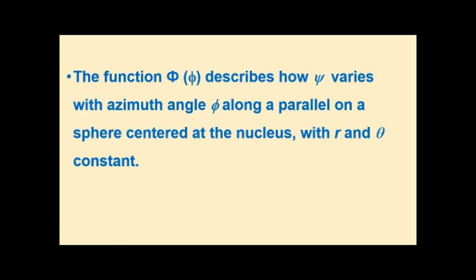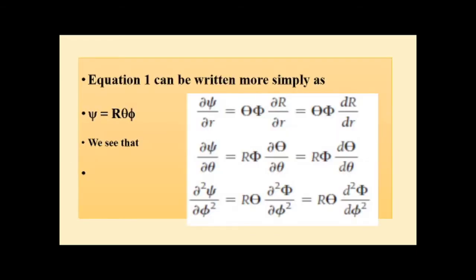The function capital Phi is independent of small r and small theta. Now, this separated wave function — the product of three functions capital R, capital Theta, capital Phi — is substituted in place of the total wave function psi. So let us examine the partial derivatives of the wave function psi.